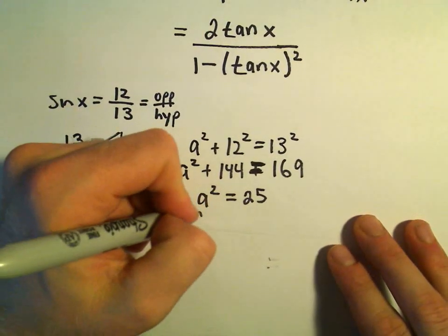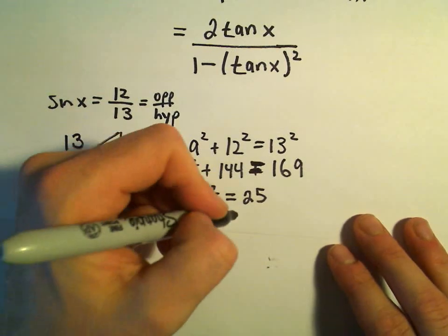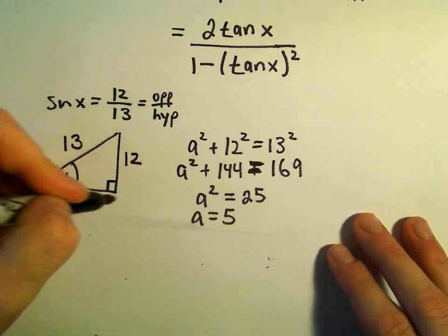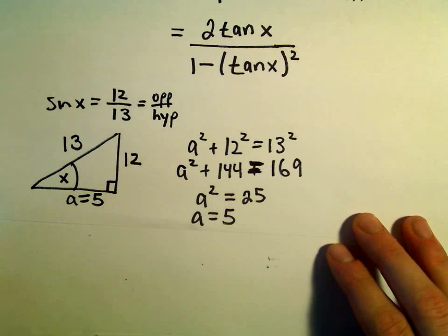And then if we take the square root of both sides, normally we would get positive or negative 5. But again, since we're talking about the length of a triangle, we're just going to use the positive 5.